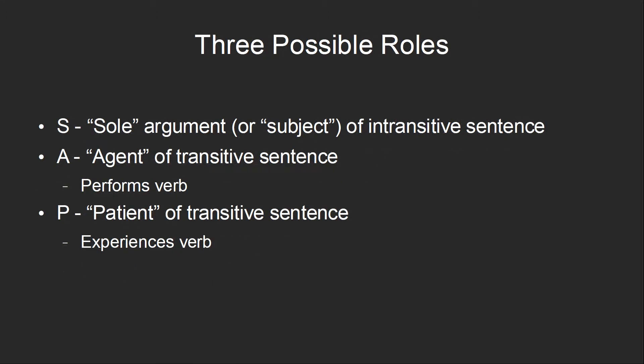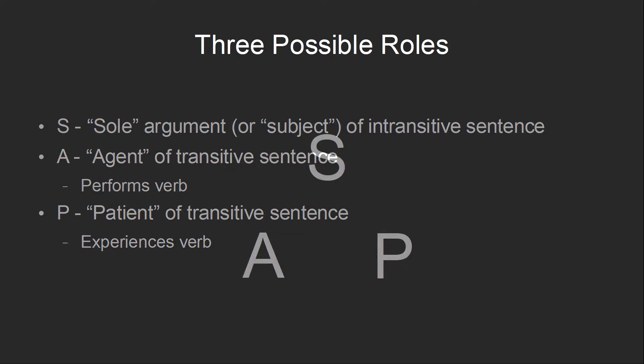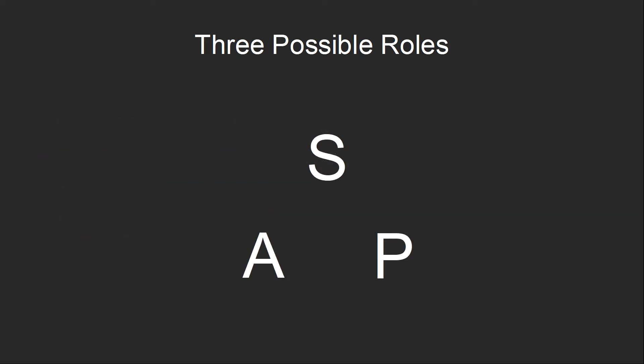Bearing in mind the difference between a transitive and an intransitive verb, there are three possible roles that a noun can play in a basic sentence. It can be the sole argument, or the subject, of an intransitive sentence. It can be the agent of a transitive sentence — that is, the person or thing performing the verb. Or it can be the patient of a transitive sentence — that is, the person or thing experiencing the verb. Morphosyntactic alignment refers to the way that we treat each of these roles.